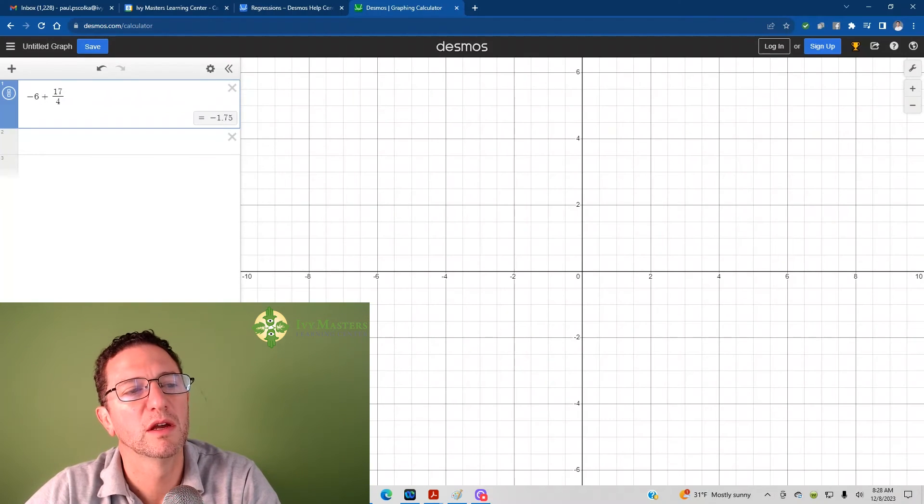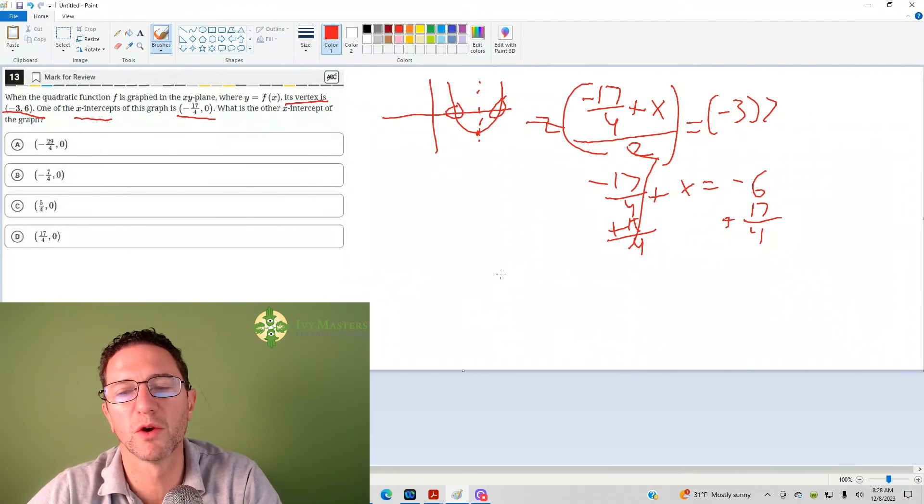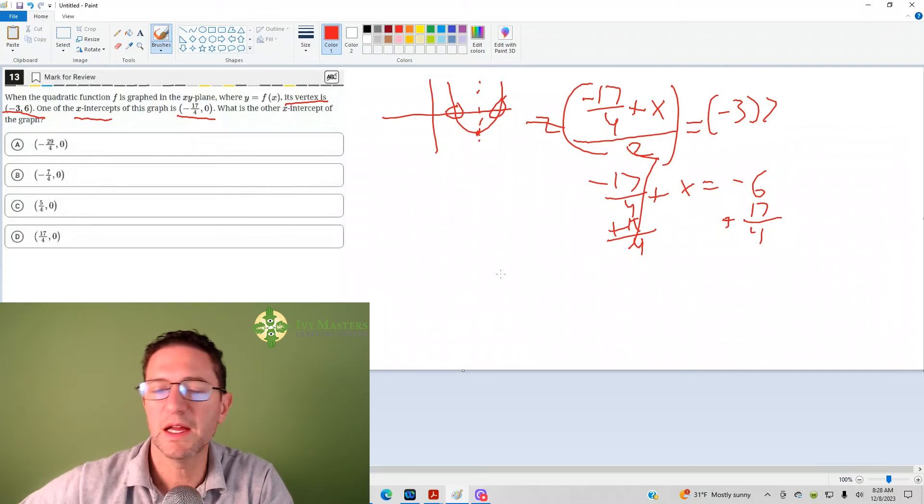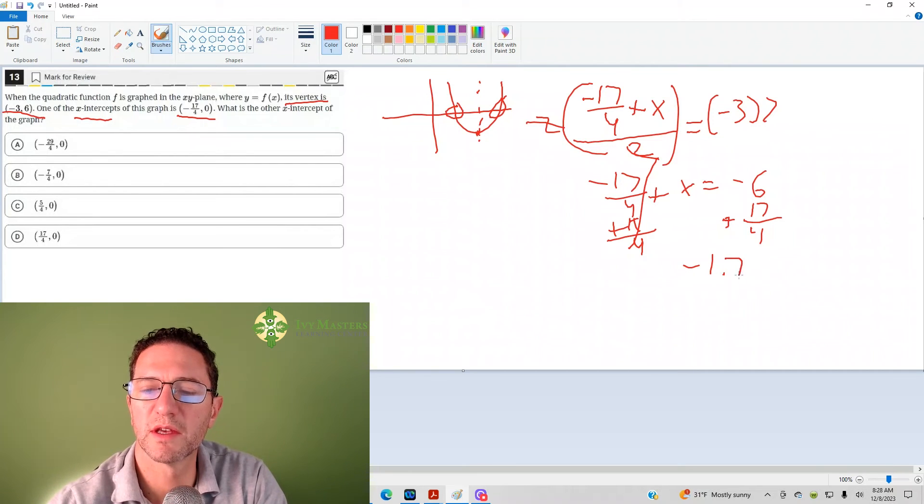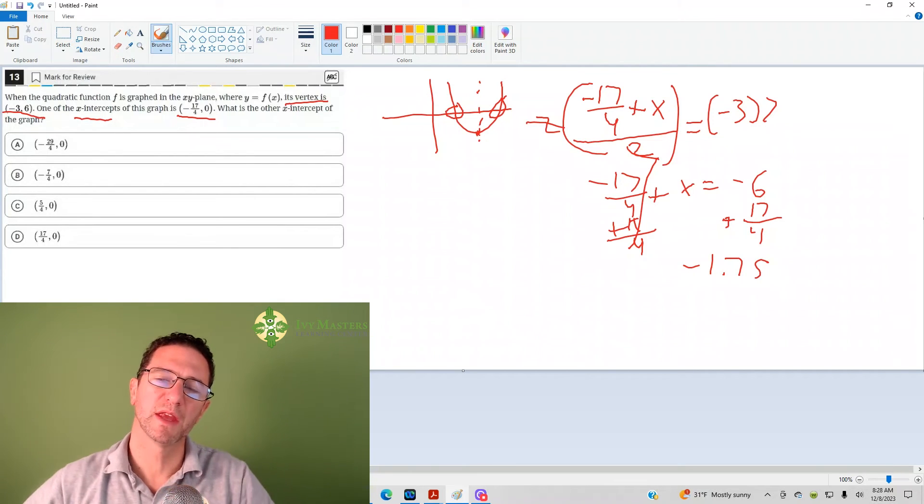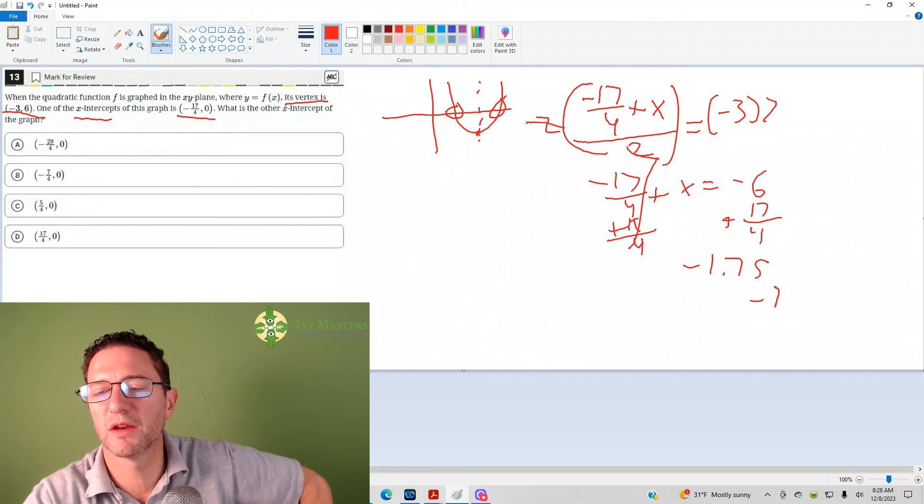Might as well just plug that into Desmos. Boom! Negative 6 plus 17 over 4 is negative 1.75. Bubble it in and move on. If it were a fraction, it would be negative 7 over 4.